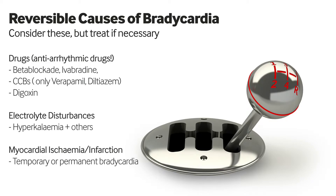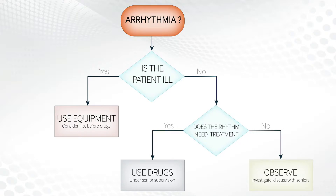Secondly, electrolyte disturbances should always be checked — in particular, a high potassium can exacerbate bradycardia. Finally, always consider whether there's myocardial ischaemia or infarction; patients with acute coronary syndromes may present with bradyarrhythmias as well as tachyarrhythmias. If the patient is very ill we may need to reach for equipment straight away, but we'll start with what drugs we can use.